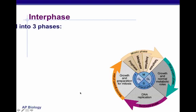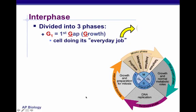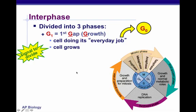Interphase is divided into three phases. G1 is the first gap or growth phase — this is when the cell is doing its everyday job. If it remains permanently, we consider it to be in G0. If it's in G1 and will soon move into synthesis, we call it G1. If the cell continues to grow, there could be a signal to divide, and DNA synthesis will occur in the S phase.